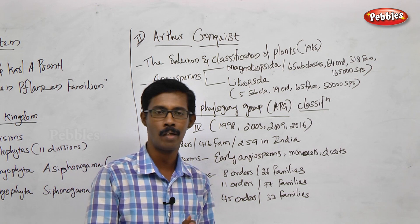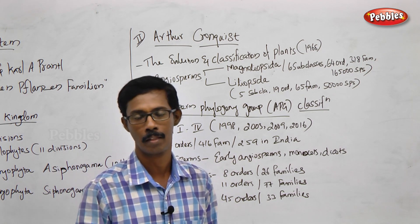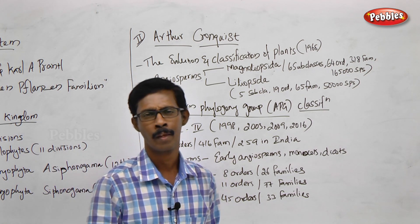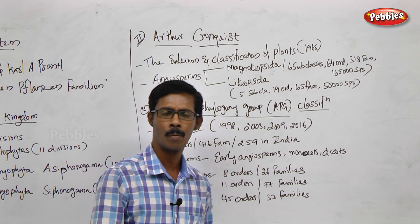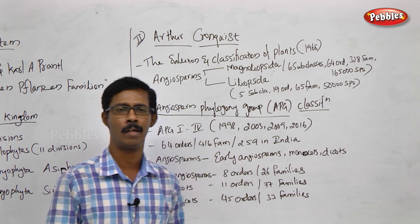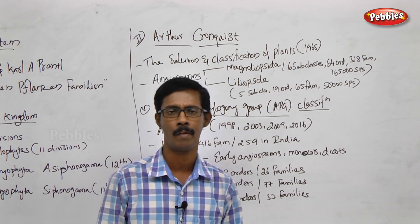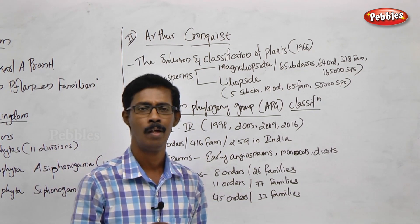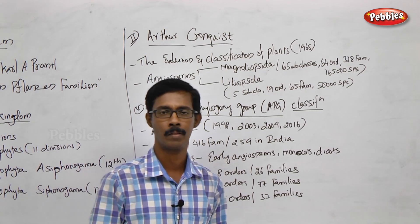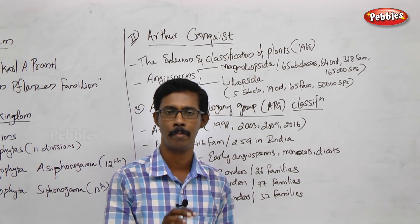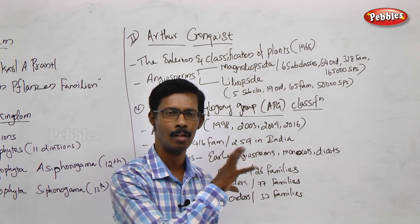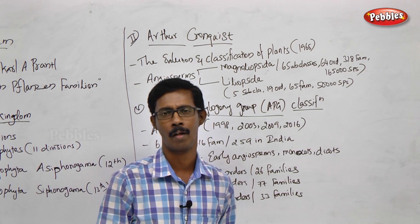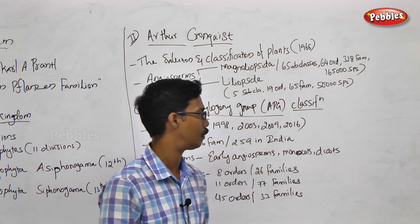This is called Phylogenetic Characters classification. It is not a primary or primitive level — it is not a type concept or type specimen system. It is very complicated. This is the system we are dealing with.